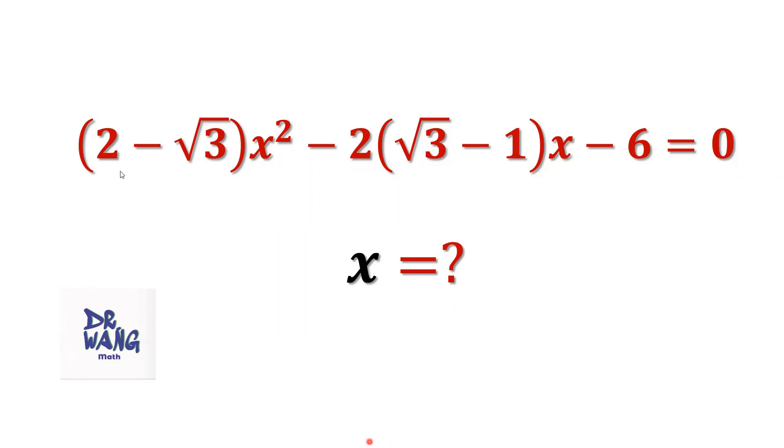(2 - √3)x² - 2(√3 - 1)x - 6 = 0. We want to solve this quadratic equation to find x.